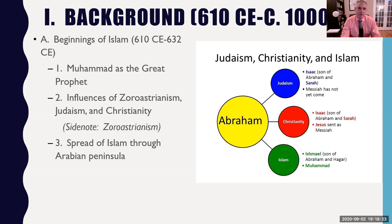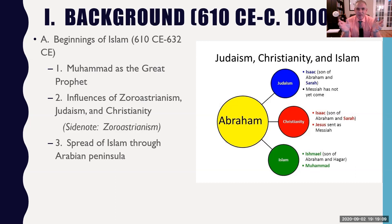Zoroastrianism pops up at around the sixth century BCE, so by this point it's been about 1,200 years that the religion has been around. The founder proclaimed that there was one God, that this God was the righteous God, opposed by an evil entity. The good and the evil were in conflict, and people should take the side of good and be righteous warriors for the righteous God. If they live the good life, there is salvation that awaits them afterwards.